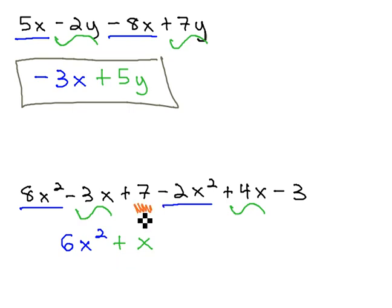Finally, 7 and negative 3 are also like terms, because they have no variables, and that would be having the variables in common, having nothing. 7 minus 3 leaves us with positive 4, and this becomes our final solution.